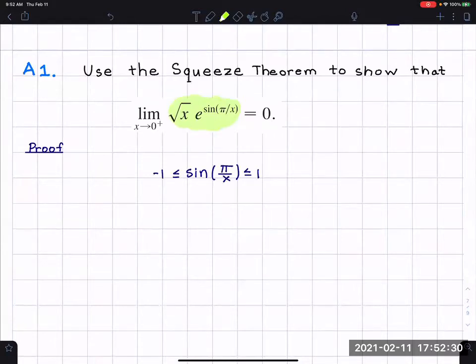So far, I only have sine in the middle between negative one and one, and I'm going to build on that. This inequality is true regardless of what the input is for sine. Here we have pi over x as an input. Of course, x can't equal zero. We're not allowed to divide by zero with that pi over x part.